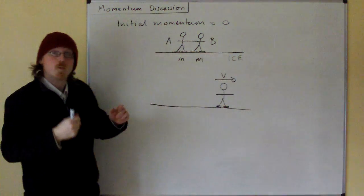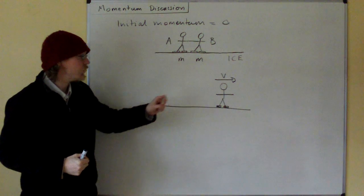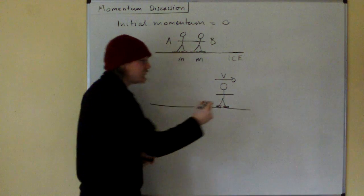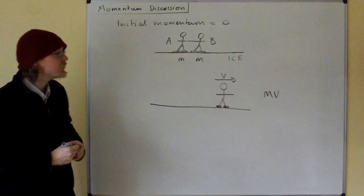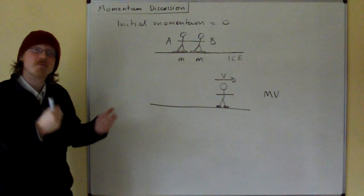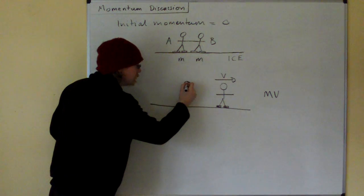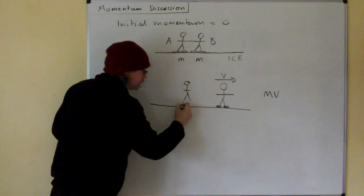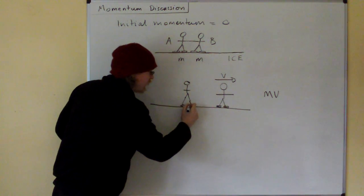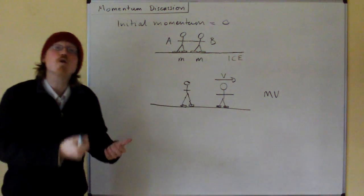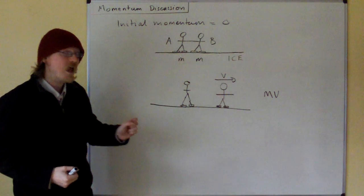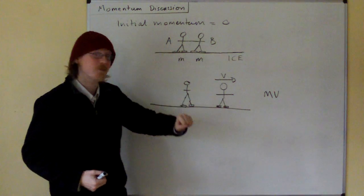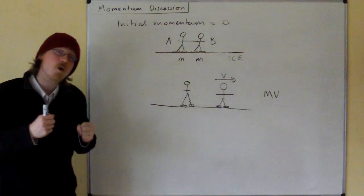Right, so we know that the momentum that twin B is going to have is going to be his mass times this velocity v. So if twin A remains stationary, then we'd have an overall change in momentum. We would start with zero momentum and we'd end up with twin B's momentum, mv. But that's not what happens.